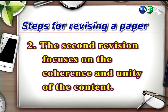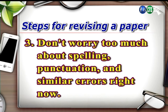And for your second revision, focus on the coherence and unity of the content. 好，第二次校正呢，你應該著重在內容的連貫性跟整體性。 And so you can add signal words or phrases between sentences and paragraphs, and you can also take away irrelevant arguments and examples. 好，你應該在句子或是段落的中間加上一些指示詞或者是一些片語，那當然同時你也可以去刪除掉一些比較不相關的論點或是例子。